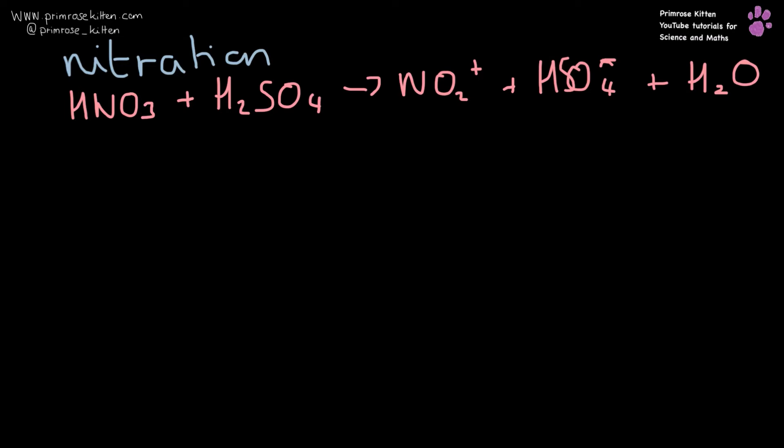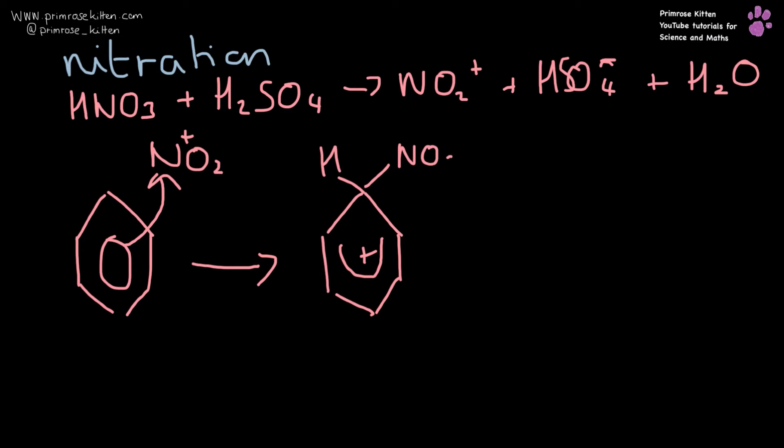So again, we are going to start off with our benzene here with our NO2+ coming in. It is going to be attracted up to the nitrogen. We are going to get this broken circle formed, hydrogen NO2.